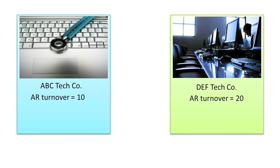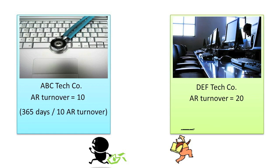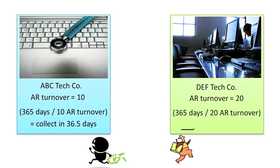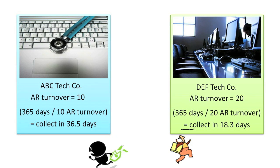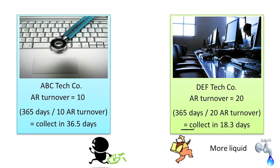For example, assume that ABC Co. and DEF Co. have AR Turnover Ratios of 10 and 20, respectively. Which company do you think is able to collect on its receivables the quickest? Because there are 365 days in a typical year, all you have to do is divide 365 by the AR Turnover Ratio to arrive at the days it takes to collect. ABC Co.: 365 days divided by 10 gives a collection period of 36.5 days. For DEF, 365 days divided by 20 gives a collection period of 18.3 days. ABC takes 36.5 days to collect, which is twice as long as DEF's 18.3 days. DEF's shorter collection period will tend to make it more liquid, and thus more able to pay off its current liabilities when they come due.